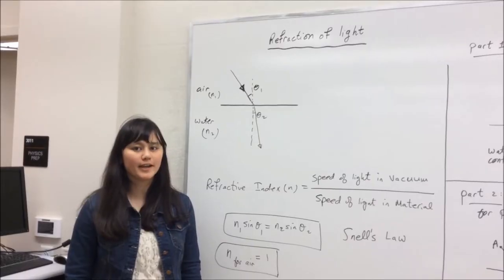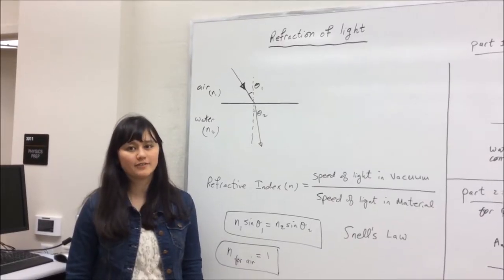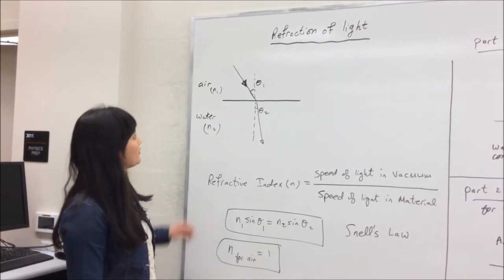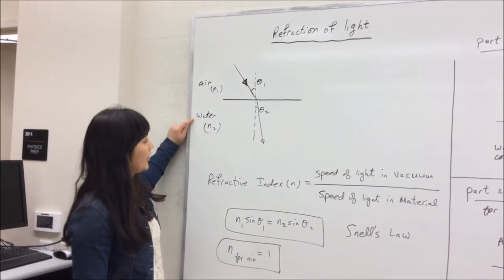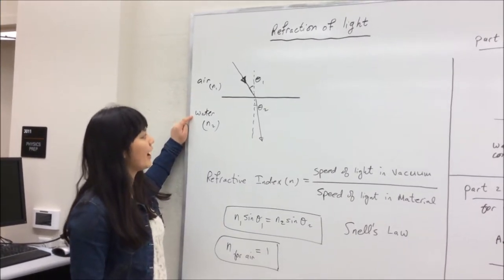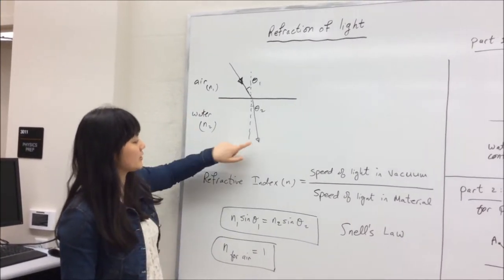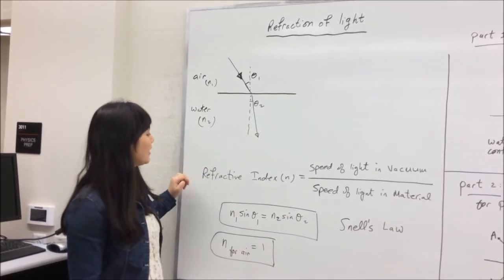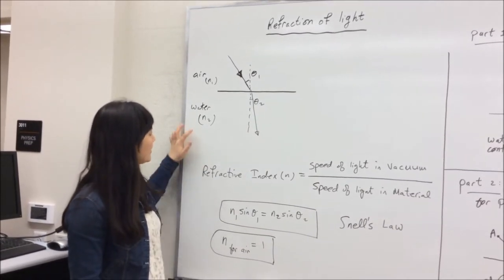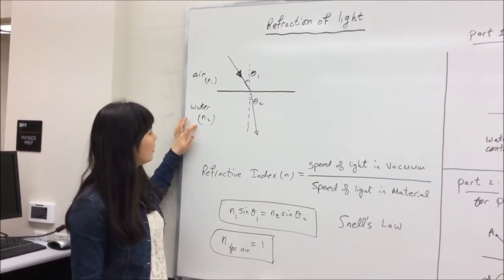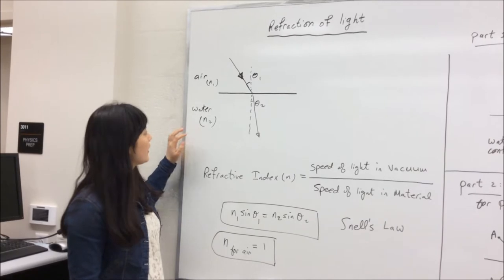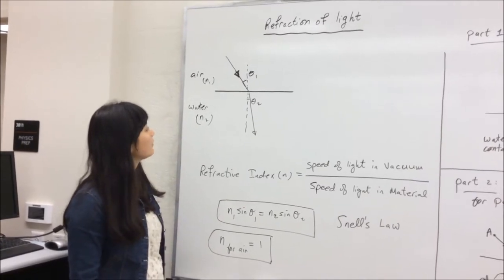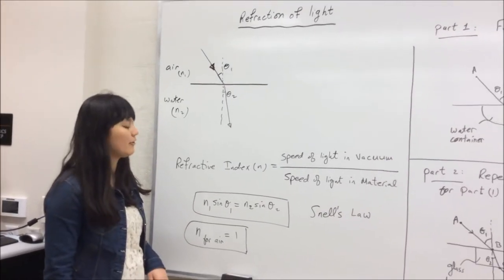Today we're going to be looking at the refraction of light. When light goes from air to water, it refracts so that it gets closer to the normal. This is because the refractive index N for water is greater than the refractive index N1 for air.